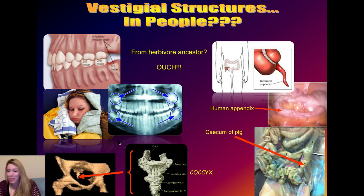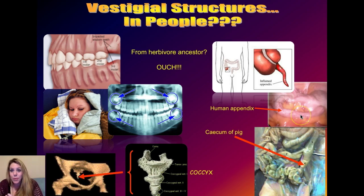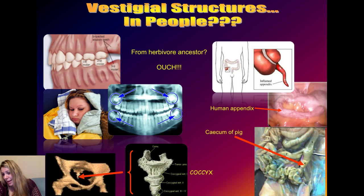Do we humans have vestigial structures? Of course. Wisdom teeth are vestigial — they don't serve any purpose for us humans, just crowding us out, but in an ancestral species they would have helped digest and munch up plants. The human appendix, which can cause appendicitis and need removal, actually helps pigs and other plant-eating animals digest plant material — it's part of their intestine, and we share a common ancestor with them. And our tailbone, the coccyx, which causes many people pain when sitting, is a vestigial remnant of tails that were present in our ancestral primates. Next up: atavistic structures.